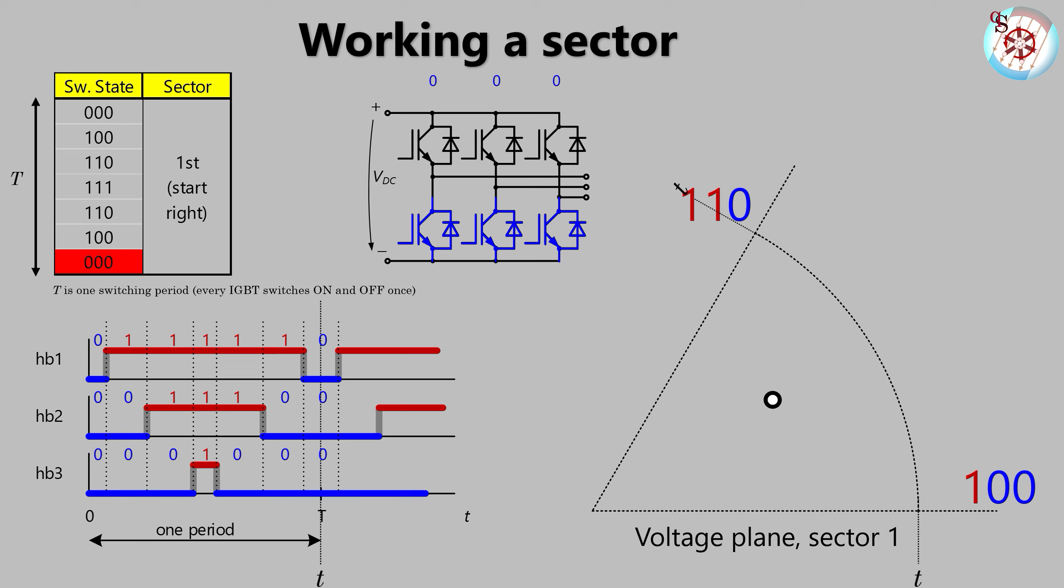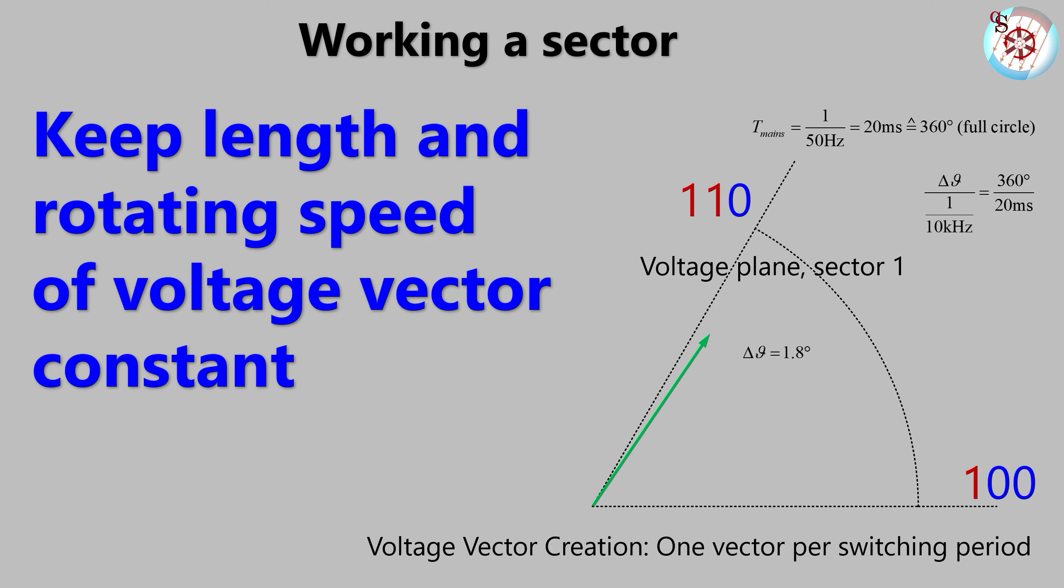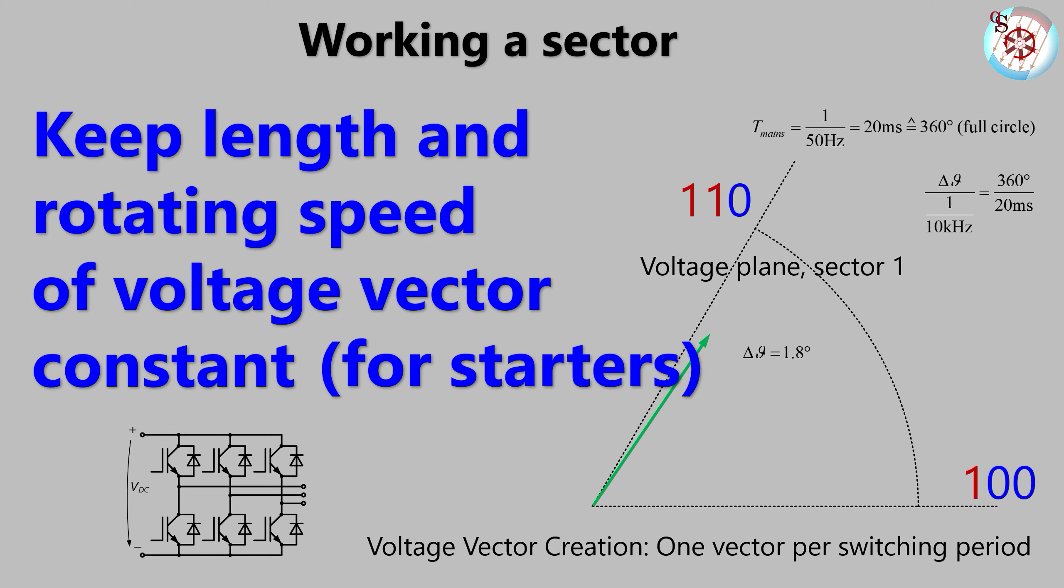Now we can look at the resulting space vector which we created over the course of one period. It is the green voltage vector. For a mains frequency of 50 Hz and a switching frequency of 10 kHz this would cover a differential angle of 1.8 degrees. So for the next 1.8 degrees we need a new voltage vector. It makes sense to give it the same length as to the previous vector. But that and also the rotational speed can be changed. Especially if high dynamic drives are the target of our control.